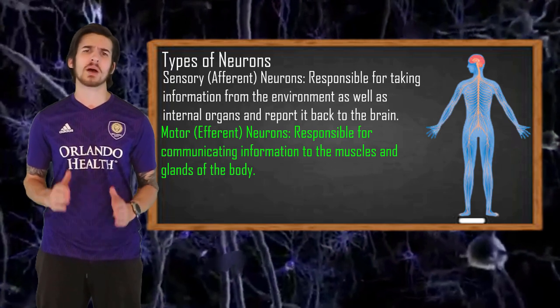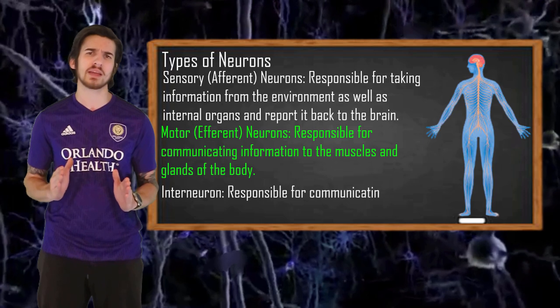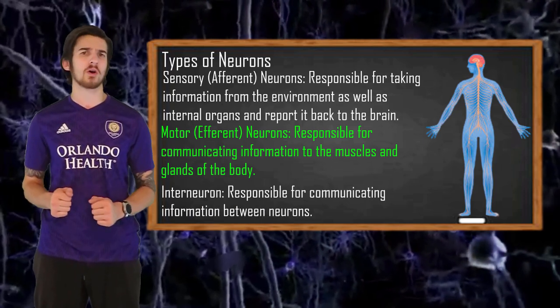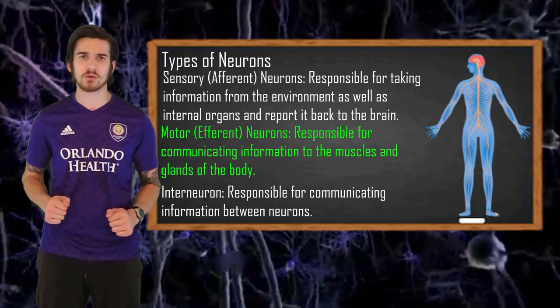Our interneurons are going to be the most abundant neuron in the body and it holds the responsibility of communicating information from cell to cell. Interneurons can be found all throughout the central nervous system which includes our brain and spinal cord.